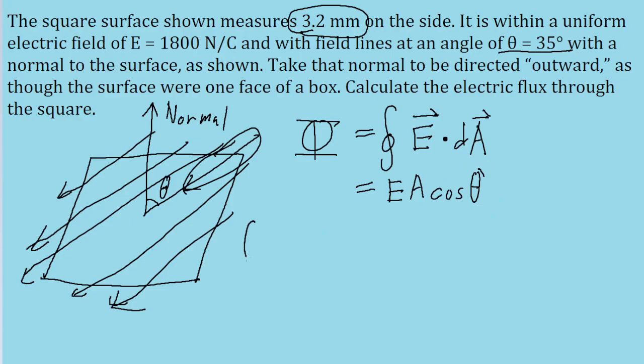can be found by taking 180 degrees minus theta. So 180 degrees minus 35 degrees equals 145 degrees.